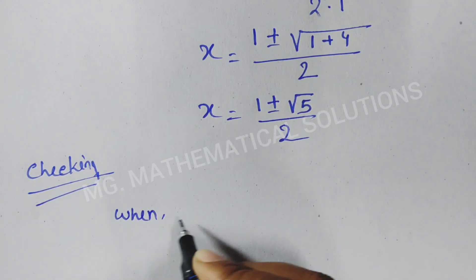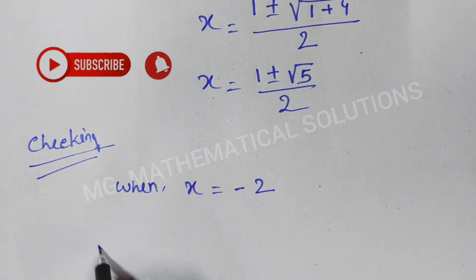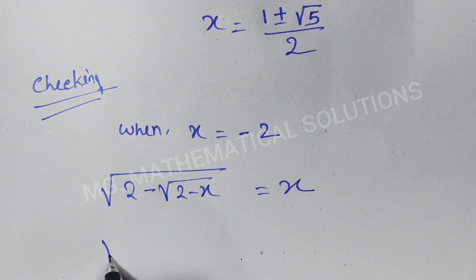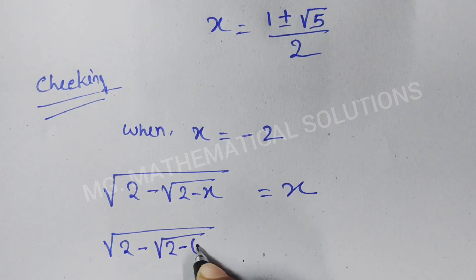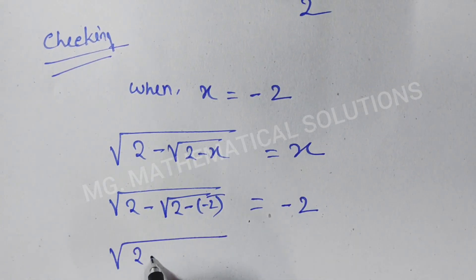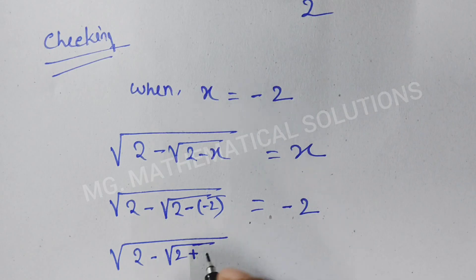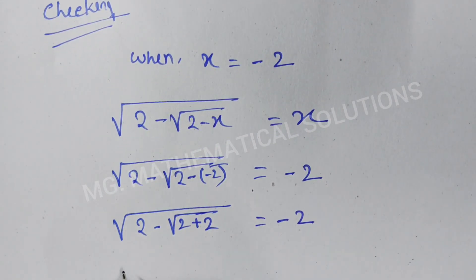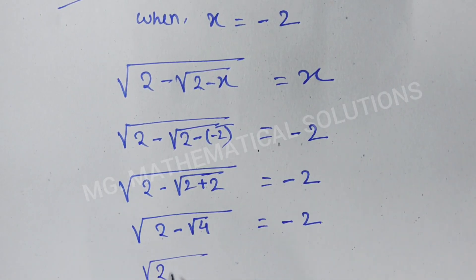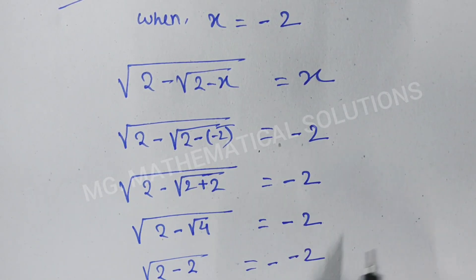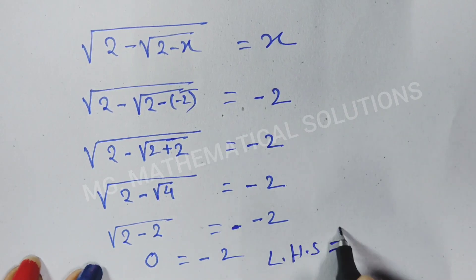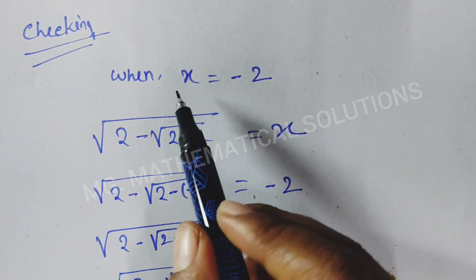Now we check the values. First, when x equals minus 2: in the given equation root under (2 minus root under (2 minus x)) equal to x, we put x equal to minus 2. We get root under (2 minus root under (2 plus 2)) equal to minus 2, so root under (2 minus root 4) equals root under (2 minus 2) equals root 0 equals 0. So 0 is not equal to minus 2. Left hand side is not equal to right hand side. Hence, x is not equal to minus 2.